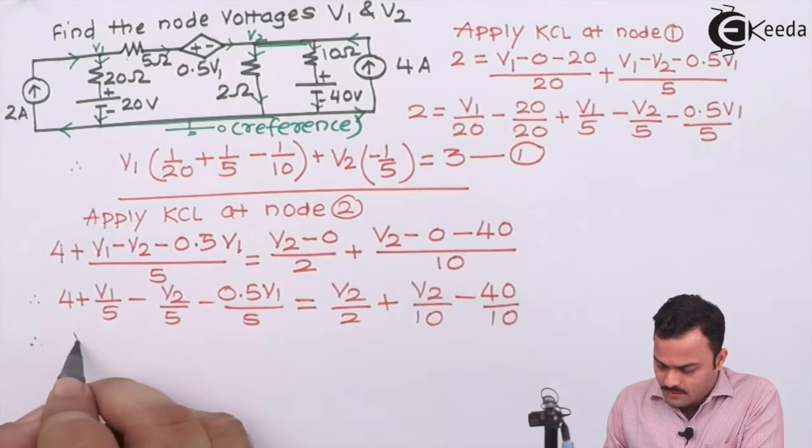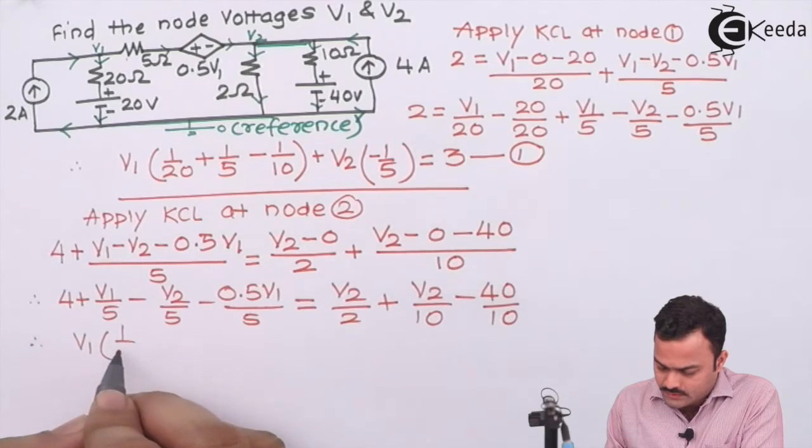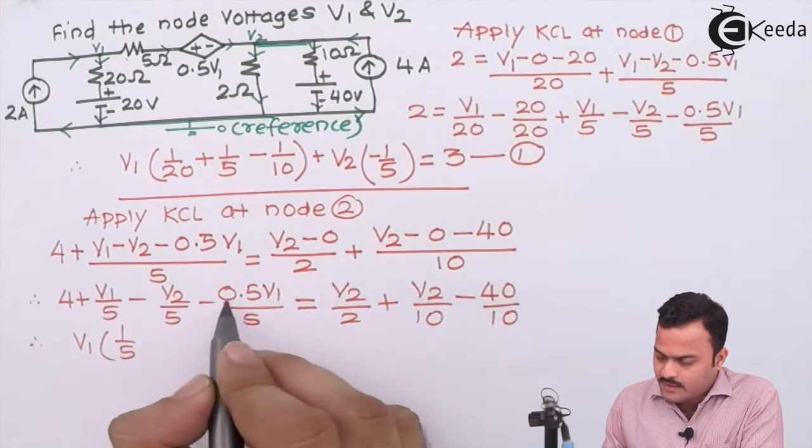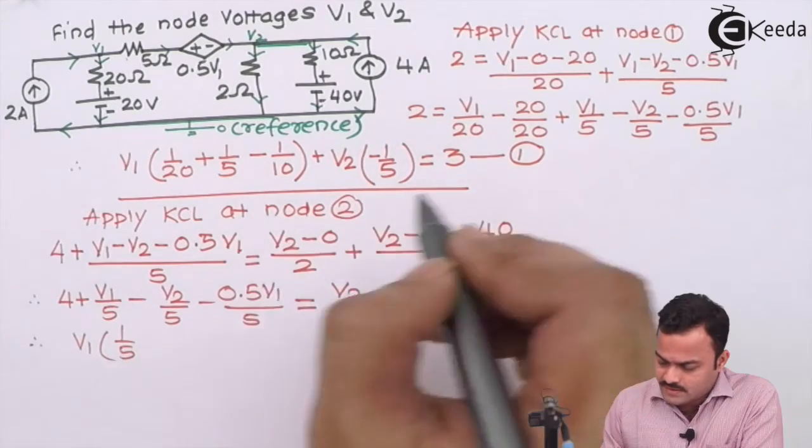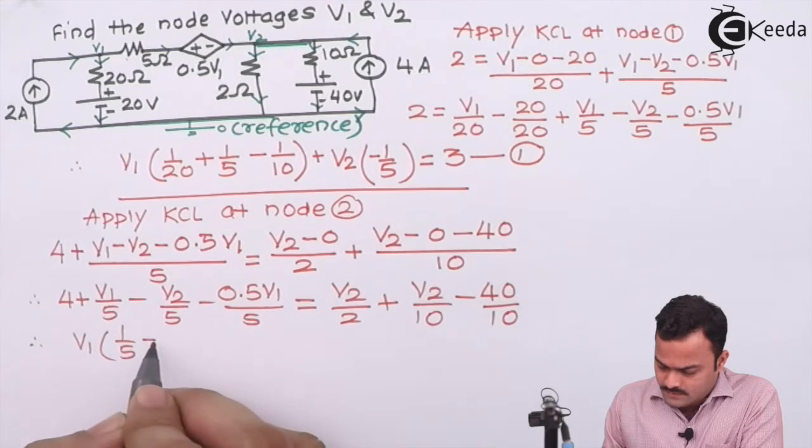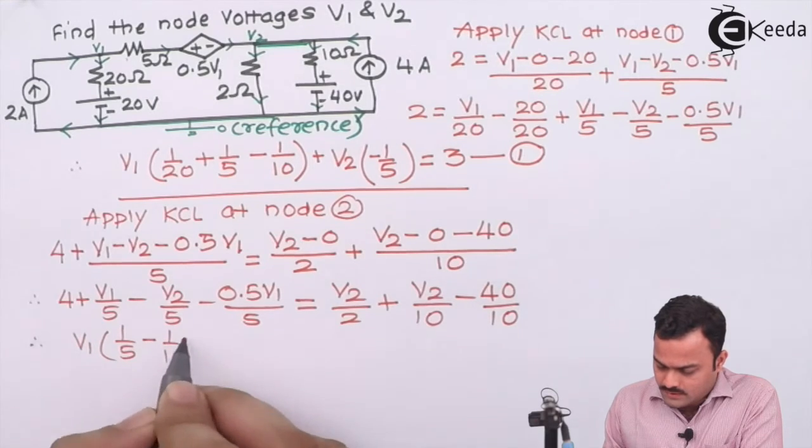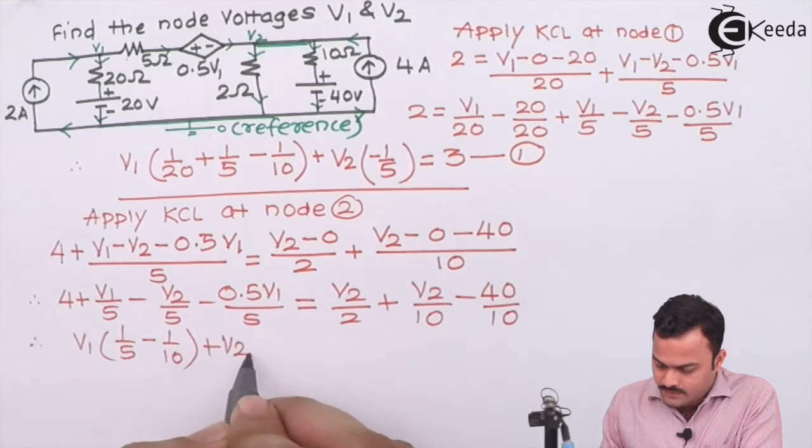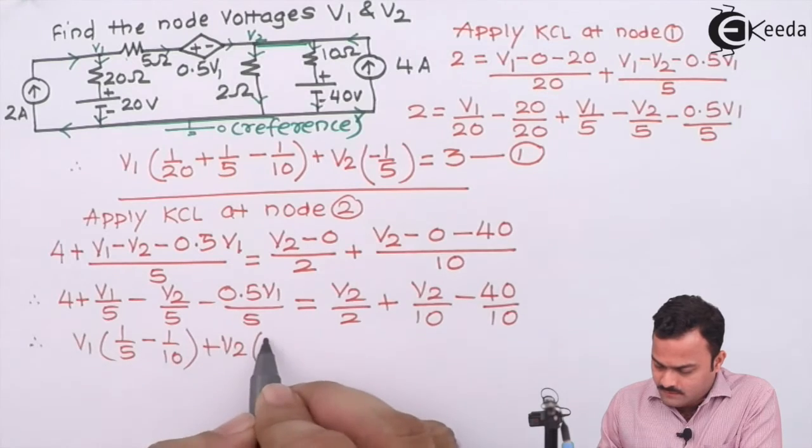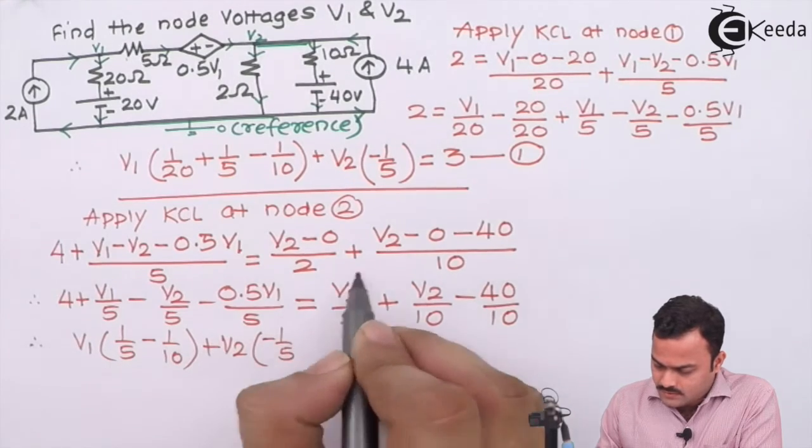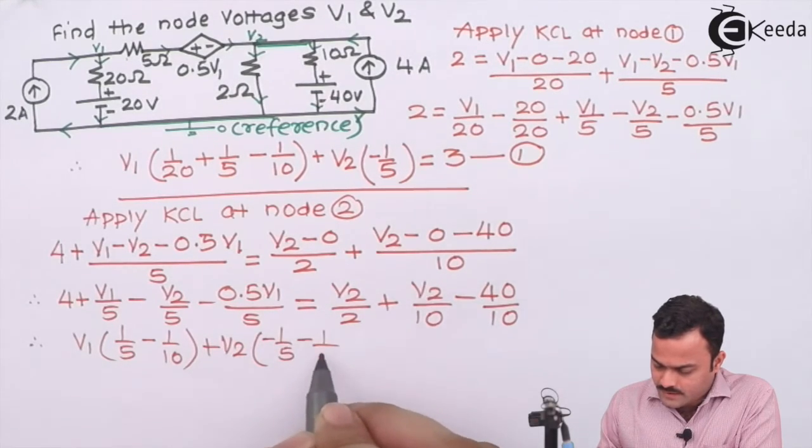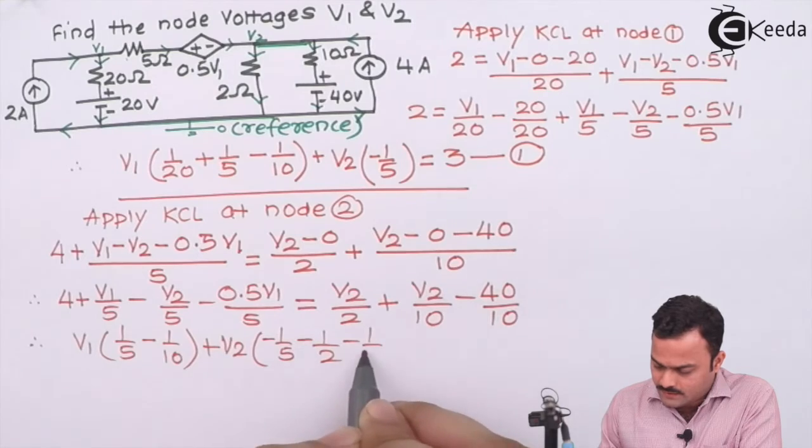Let's club all coefficients of V1 together, so it's 1 by 5 and already we have taken this as minus 1 by 10. So here also minus 1 by 10. Plus V2, over here minus 1 by 5, these two terms come over here, becomes minus 1 by 2 minus 1 by 10.